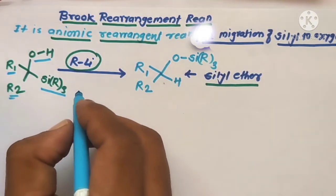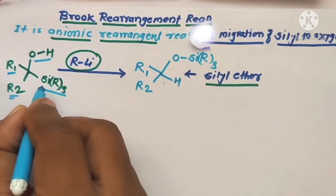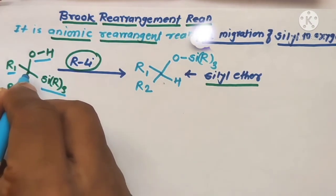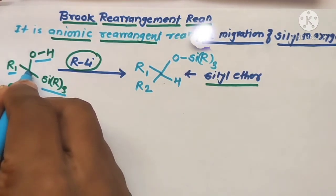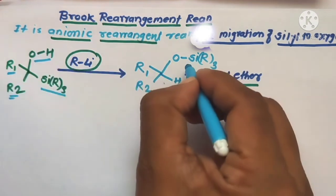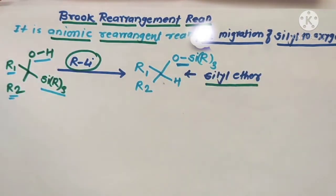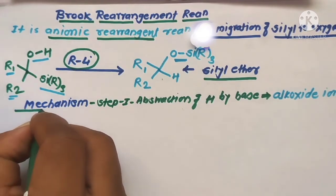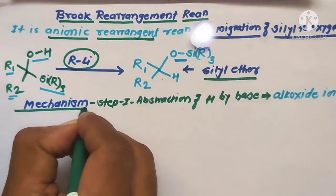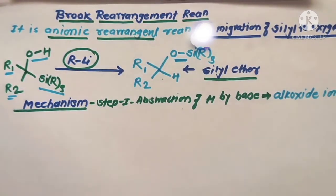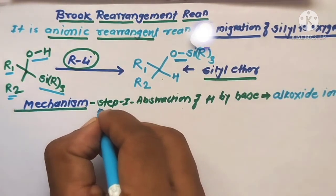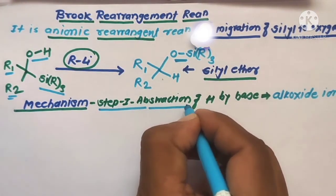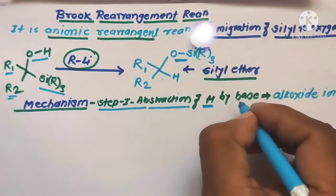In this reaction, a migration takes place — the silyl group migrates from the carbon atom toward the oxygen atom, forming the final product. Now let us discuss the mechanism of this reaction. In step one, there is abstraction of a proton from the hydroxy group by the base to form an alkoxide ion.